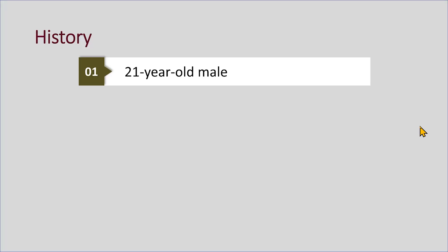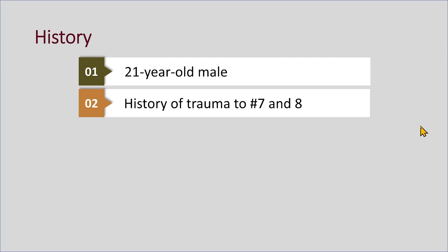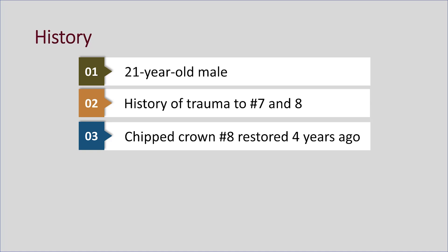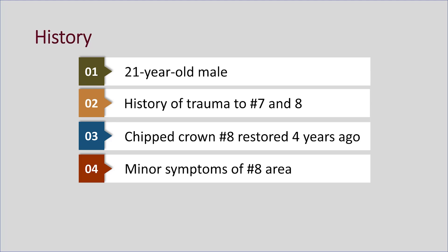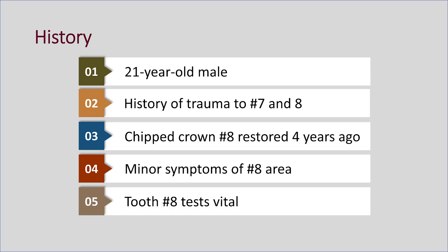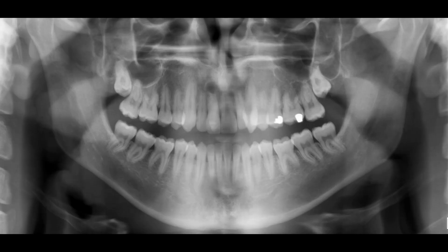Let's start with the history of the patient. This is a 21-year-old male. About four years ago, he had trauma to his right lateral incisor and right central incisor. The central incisor crown was chipped and was restored. At this time, there are some symptoms in the central incisor area. A vitality test was done — this central incisor tests vital but somewhat slower than the lateral incisor. So the doctor had ordered this panoramic radiograph.